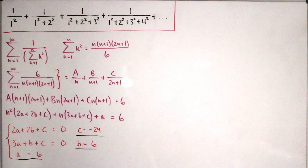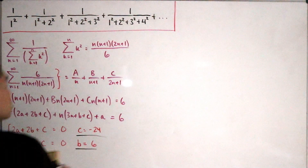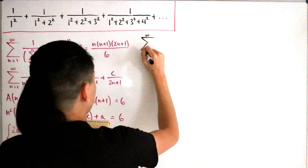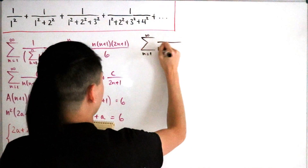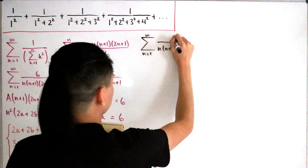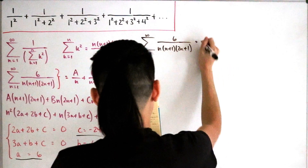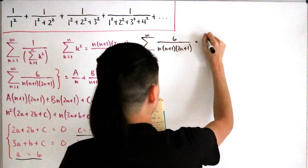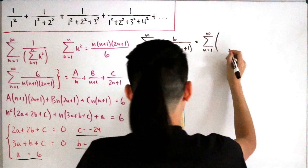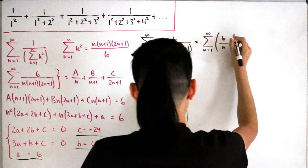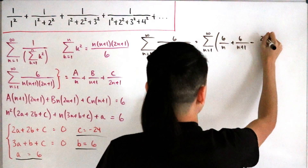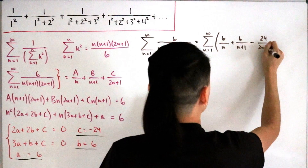Proceeding forward, we substitute our constants back in. The infinite sum from n=1 of 6/[n(n+1)(2n+1)] can be written as the infinite sum of 6/n + 6/(n+1) − 24/(2n+1).